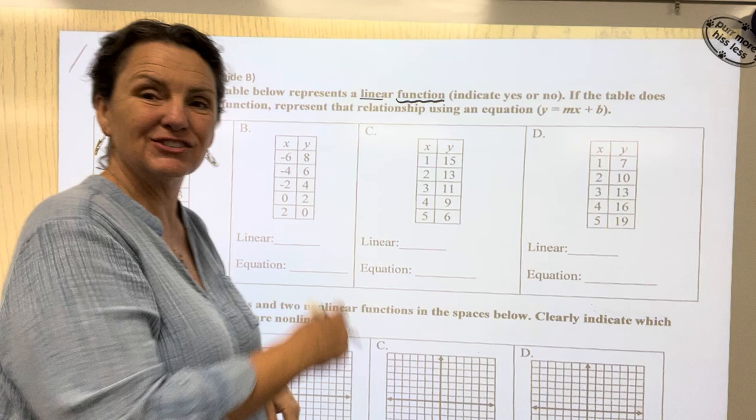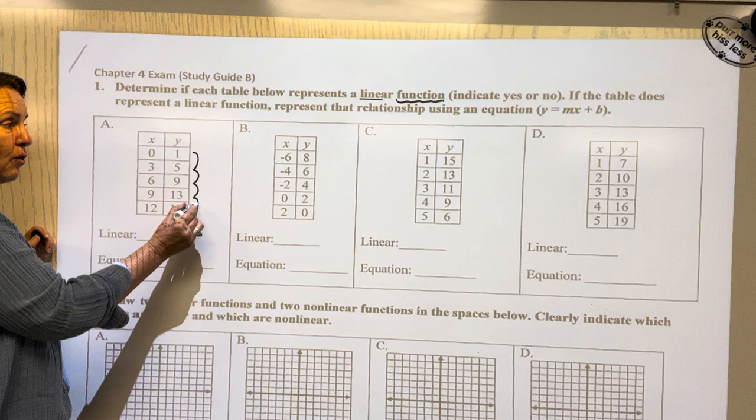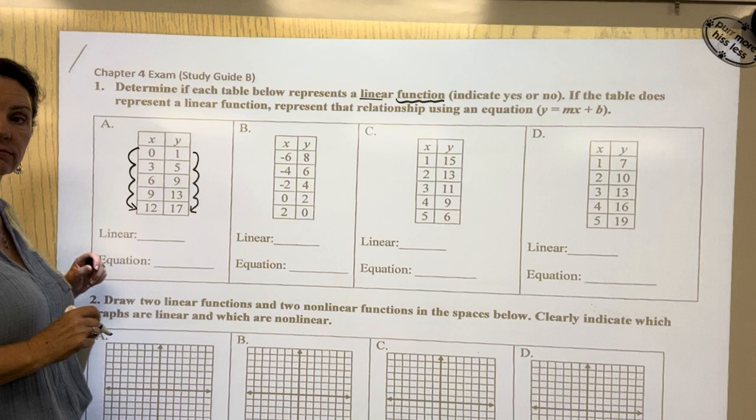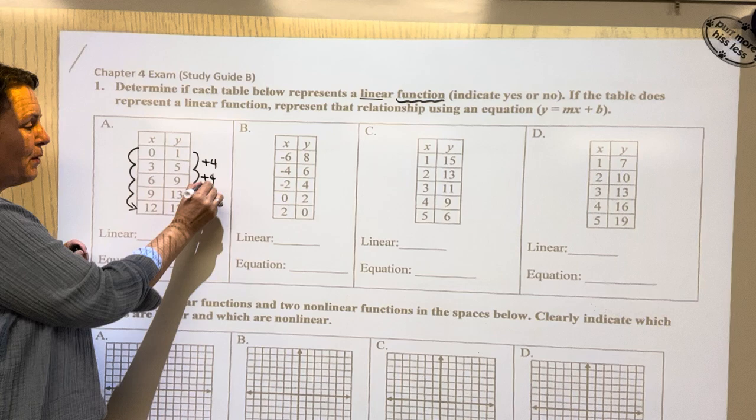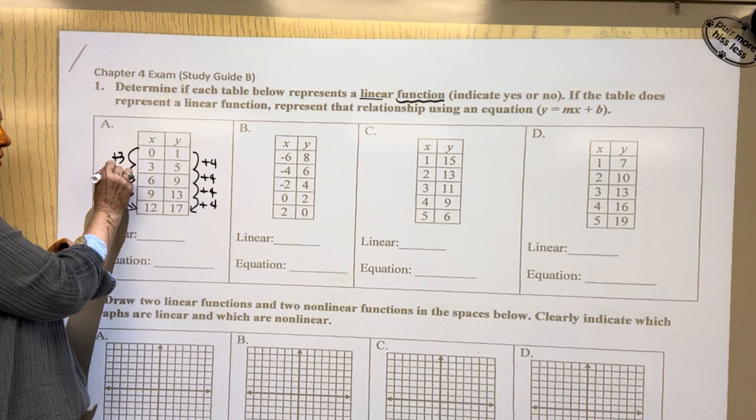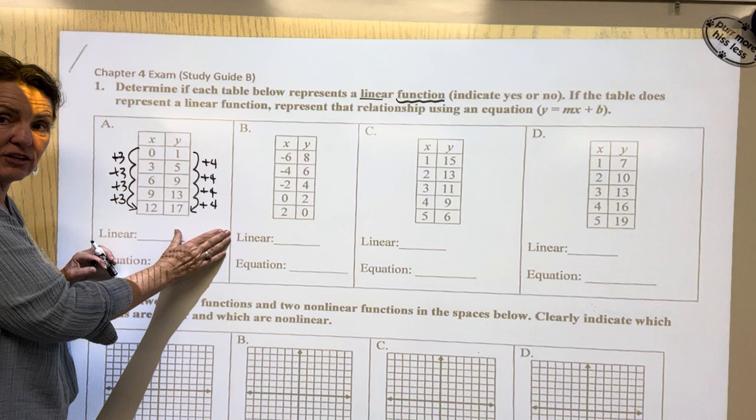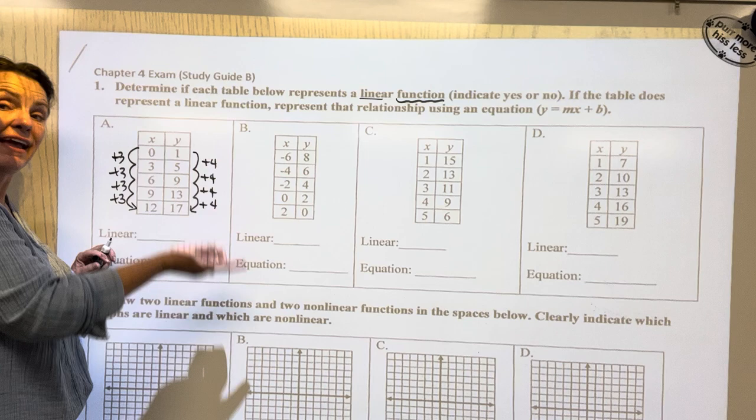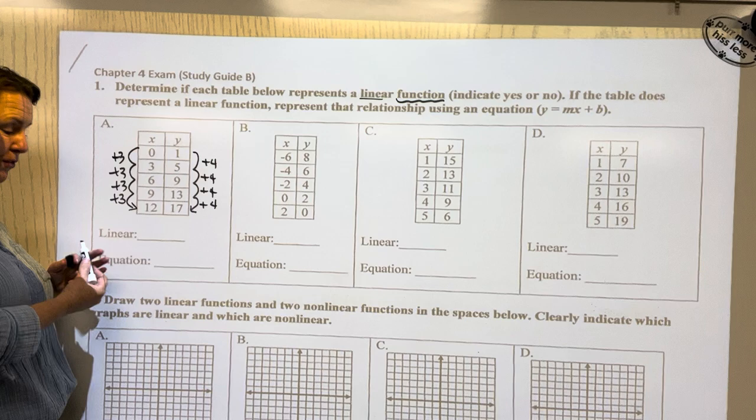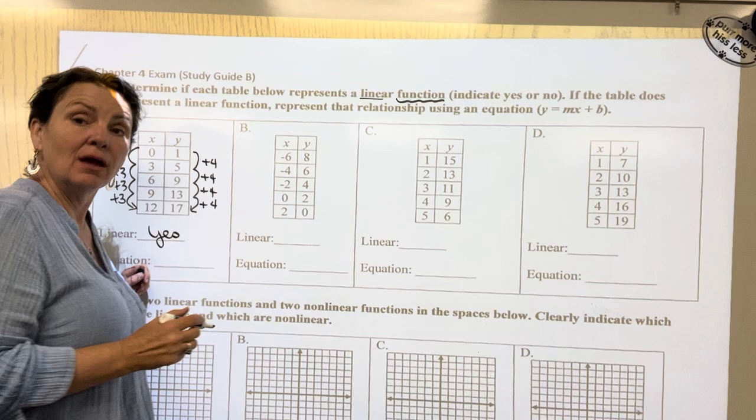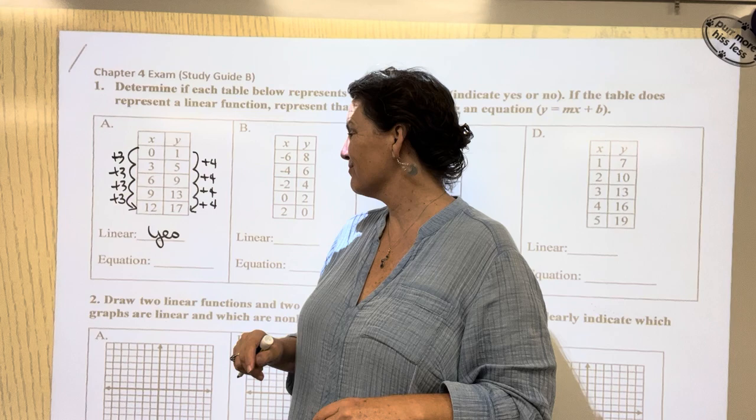So the first thing that we're going to do is find the rate of change for our y value and our x value. So over here I can see that this side is plus 4 all the way through. Nice! On this side I can see it's add 3 all the way through. Because we have a constant rate of change, that means the same number over and over and over again on this side, and we have a constant rate of change on this side, the same number over and over again. We can say yes. This is going to be a linear function because we have a constant rate of change for both our x value and our y value.